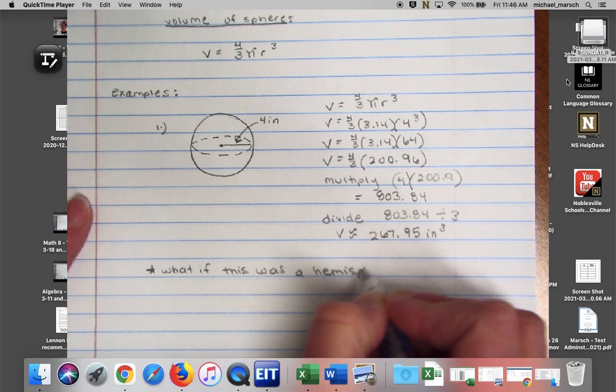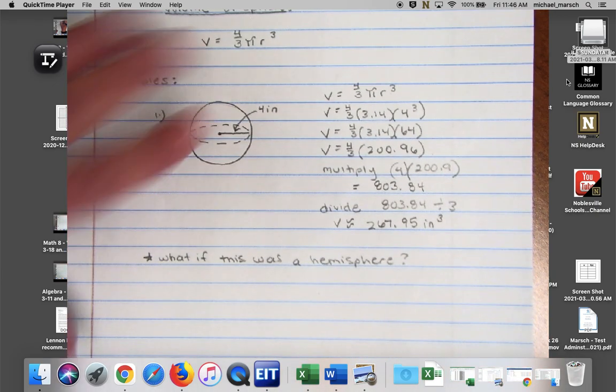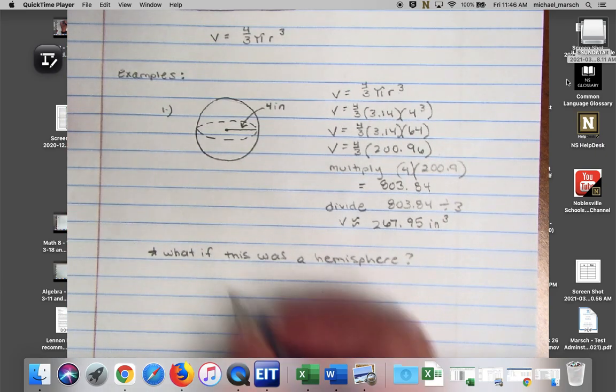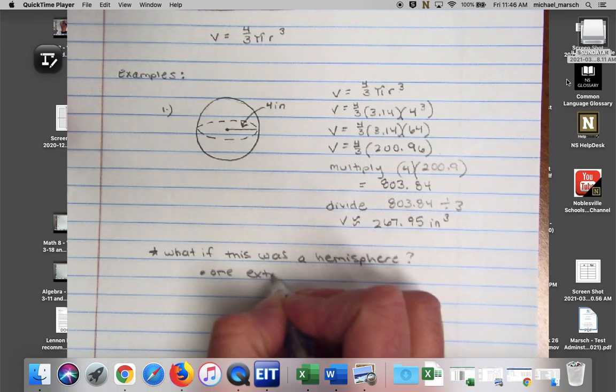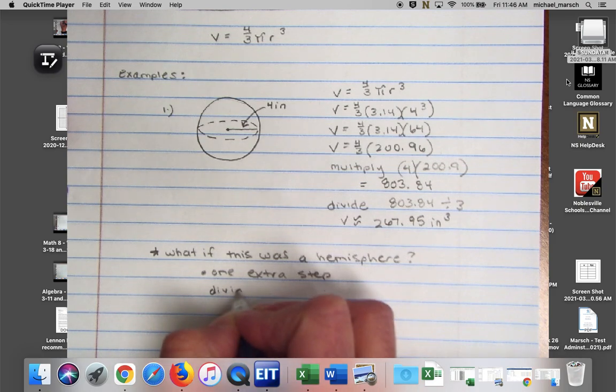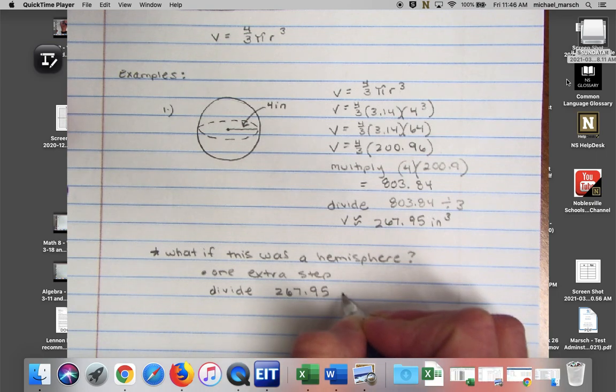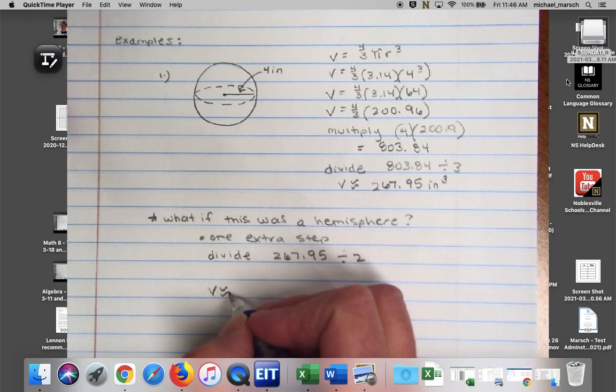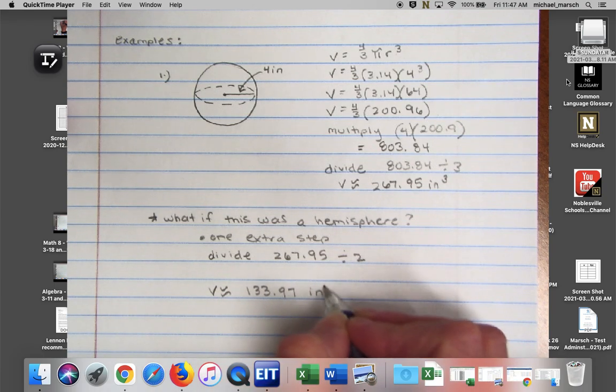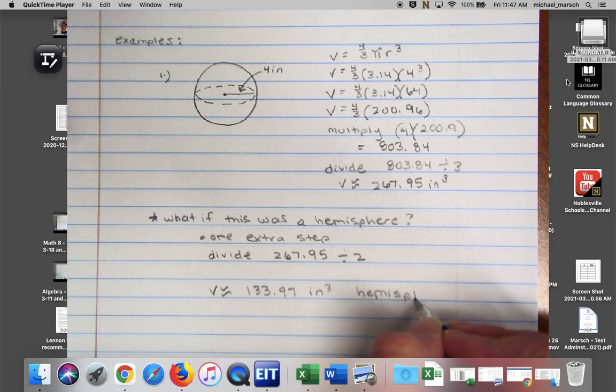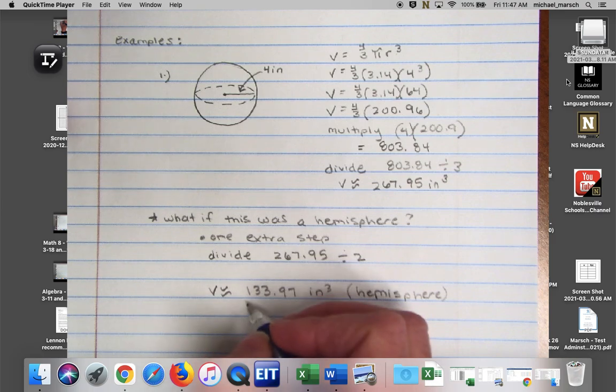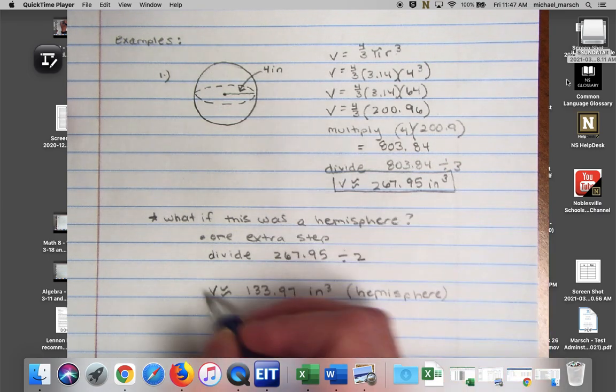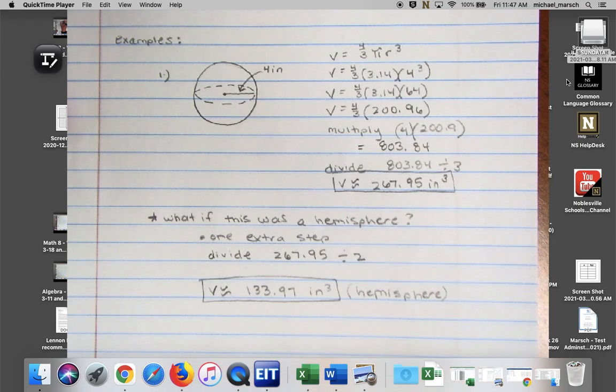What if this was a hemisphere? How would I find the volume, you think, if this all of a sudden was just half of the sphere? Yep. One extra step. Divide 267.95 divided by 2. So then that volume would be about 133.97 inches cubed. And that's for our hemisphere. So we've got this volume of our sphere, and then if we cut it in half, we take half of it, and we get the volume of our hemisphere.